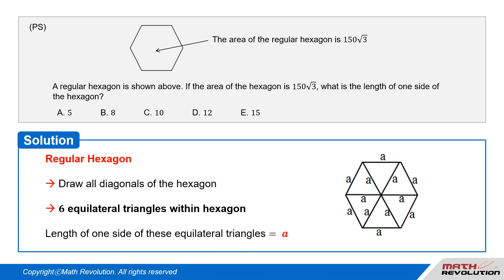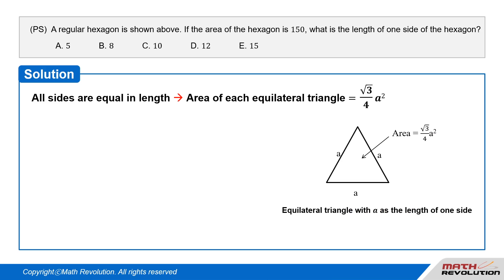Let A be the length of one side of these equilateral triangles. Since all sides are equal in length, the area of each equilateral triangle is (√3/4)A².